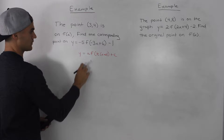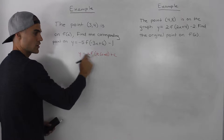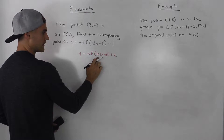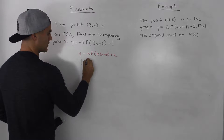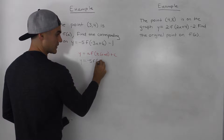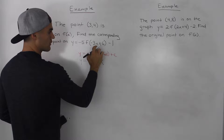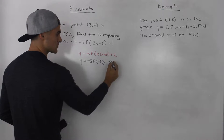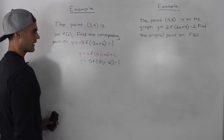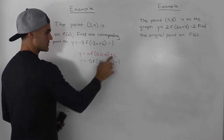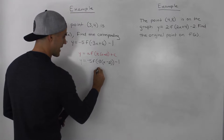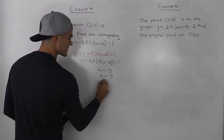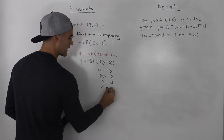The first thing to do is take this transformed function and put it in our general transformation format. Notice how this negative 3 is attached to the x — we have to factor it out to get a k value. So we rewrite the function as negative 5f of negative 3 times (x minus 2), minus 1, since positive 6 divided by negative 3 is negative 2. Now it's easy to see: a equals negative 5, k equals negative 3, d equals positive 2, and c equals negative 1.